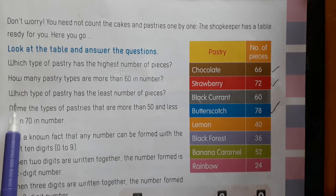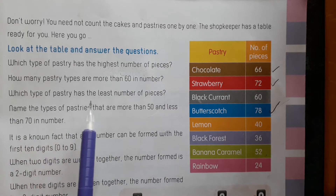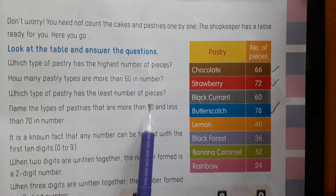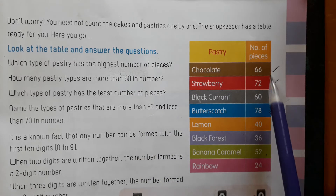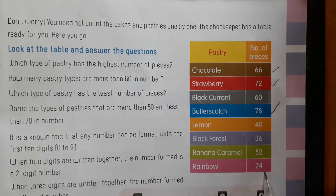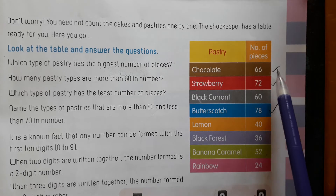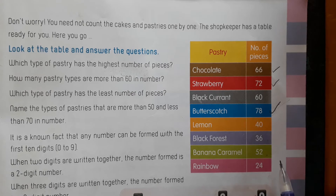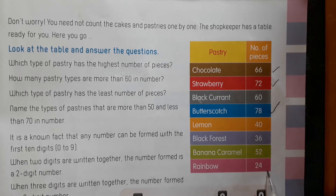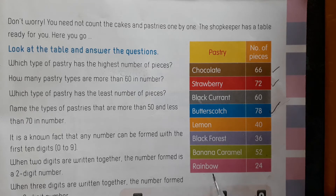Third question. Which type of pastry has the least number of pieces? Observe these numbers children — which number is smaller than the other numbers? 66, 72, 60, 78, 40, 36, 52, 24. Which number is smaller? 24. So rainbow type of pastry has the least number of pieces.